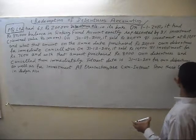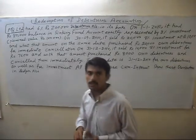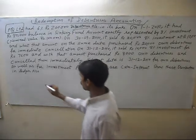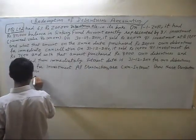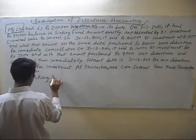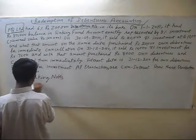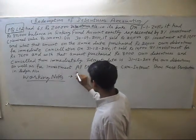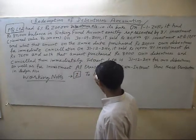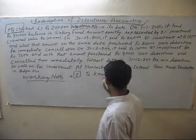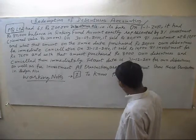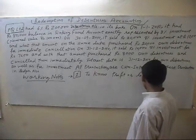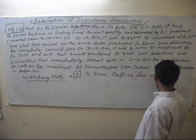Show these transactions in the ledger accounts. First of all, we want to know some working notes. The first working note is profit or loss on sale of investments.